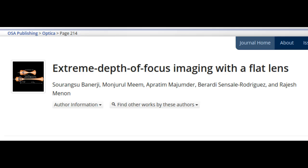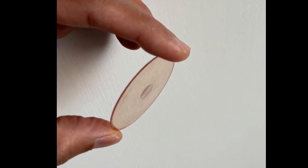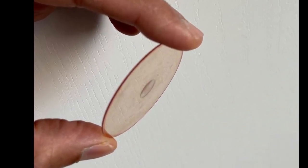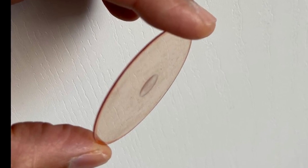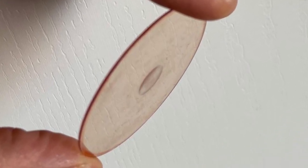Flat lenses use nanostructures, patterns on a flat surface rather than bulky glass or plastic, to achieve the important optical properties that control the way light travels.